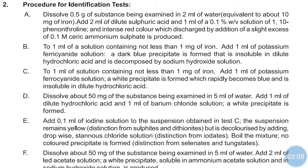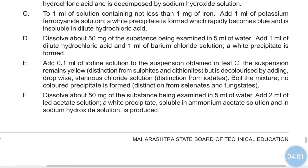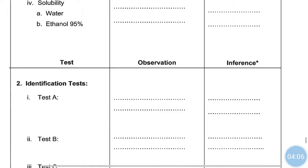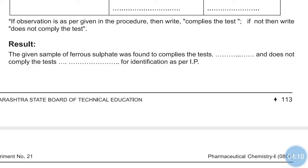Now see the procedure for the identification test — the B test. To 1 ml of solution containing not less than 1 mg of iron, add 1 ml of potassium ferrocyanide solution. At that time a dark blue precipitate is formed, which is insoluble in dilute HCl and is decomposed by NaOH solution. These are the observations and inferences for the test.